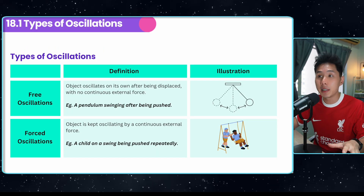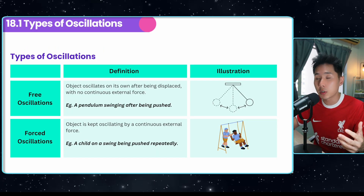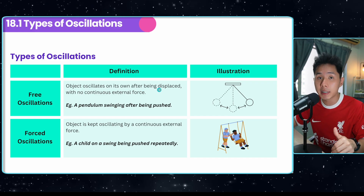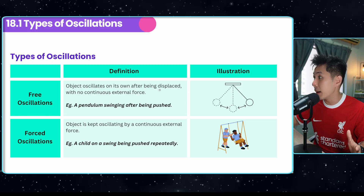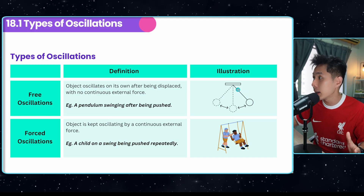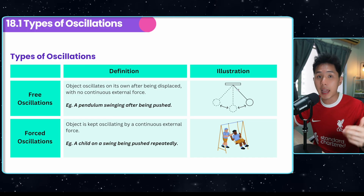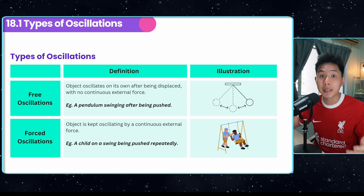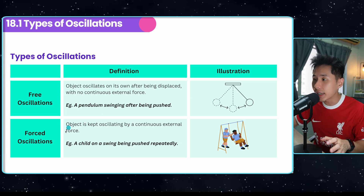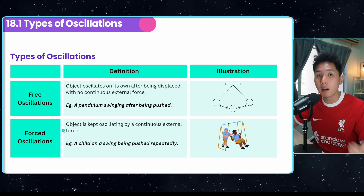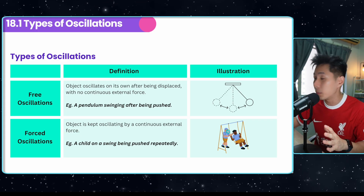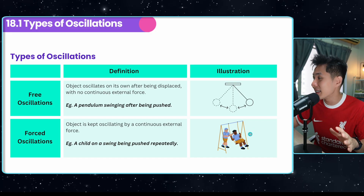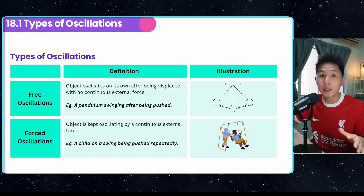The two main types of oscillations: one is free oscillations, in which they oscillate on their own after being displaced with no external force — just a pendulum. If there's no external force like air resistance or someone pushing it, it will move forever at the same pace. The second type is forced oscillations, where a person needs to push the other kid in order for the seesaw to move again.